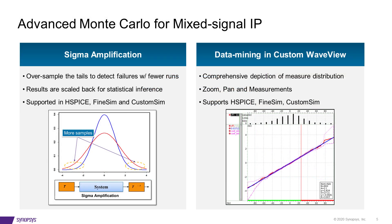Process variation for FinFET circuits rises significantly due to increased circuit complexity. Mixed-signal IPs require comprehensive PVT scenario coverage, which can be resource intensive and time consuming. Synopsys' custom design platform provides sigma amplification to amplify the sigma of each independent random variable, such as process parameters, and increase the probability of generating a larger fraction of multi-corner samples near the distribution tails while using fewer runs.